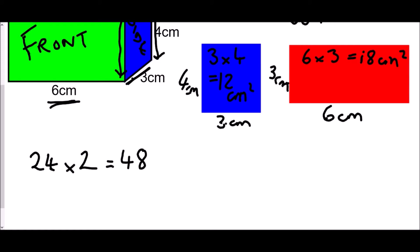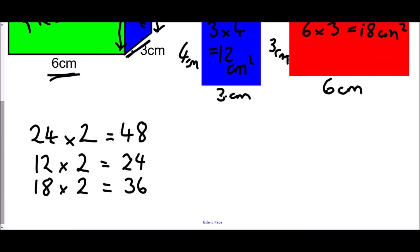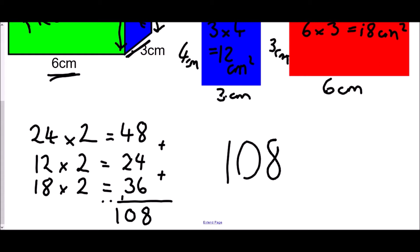The side was 12 cm², multiplied by 2 gives 24 cm². The top was 18 cm², multiplied by 2 gives 36 cm². Adding all three together: 48 + 24 + 36 = 108 cm². So the total surface area is 108 cm².